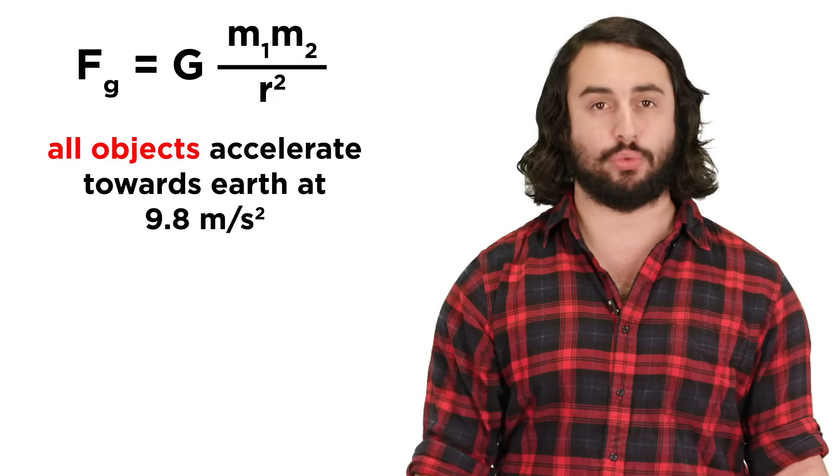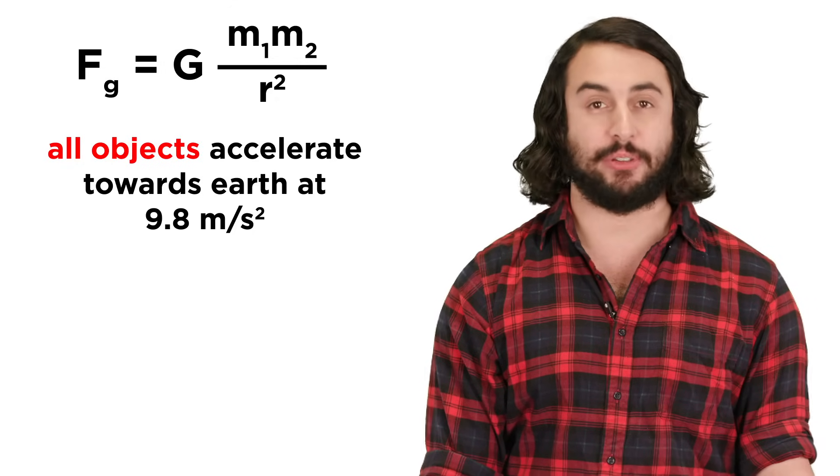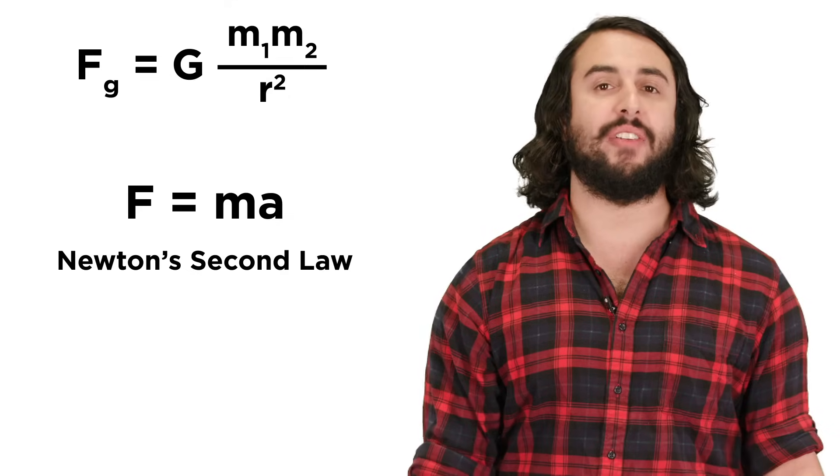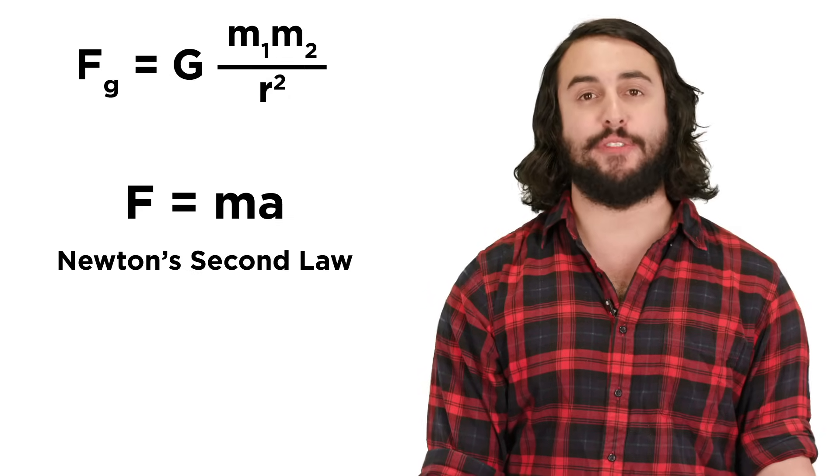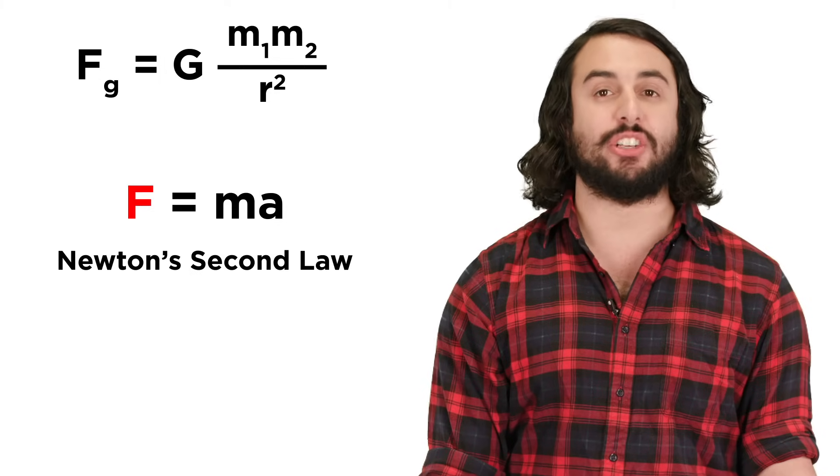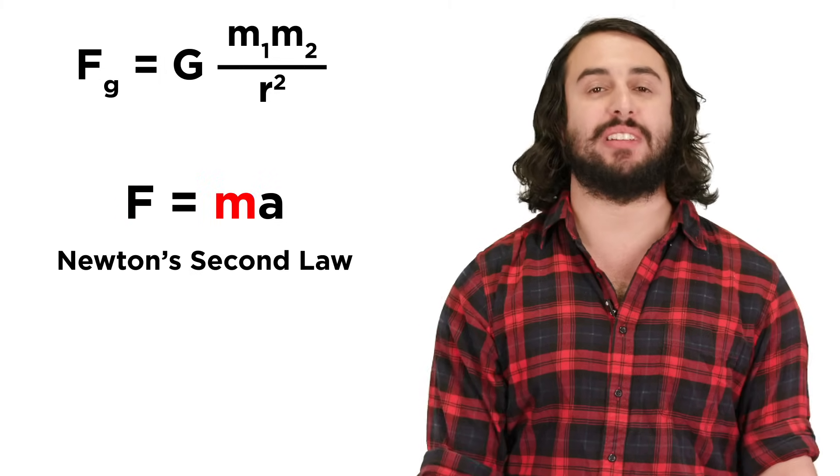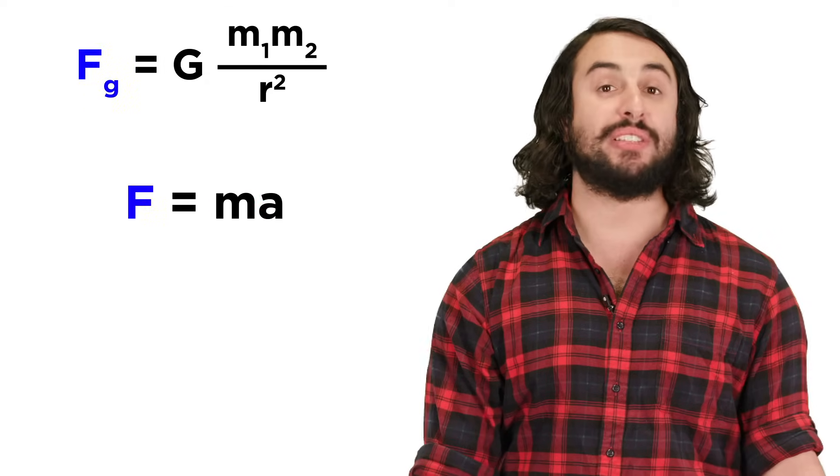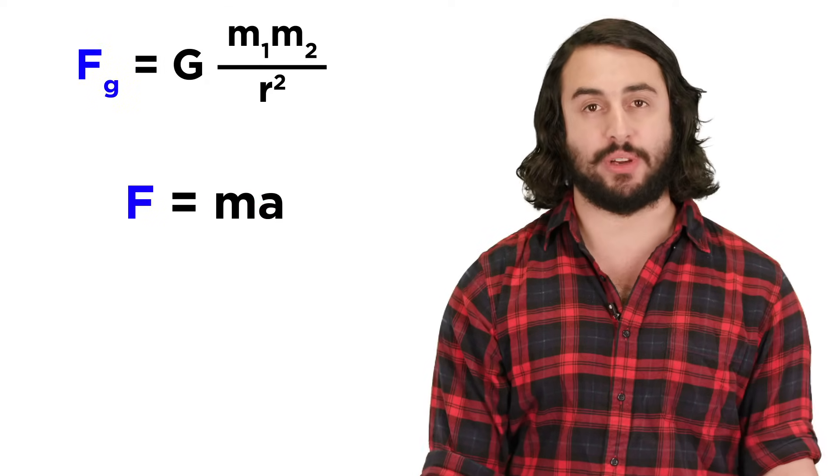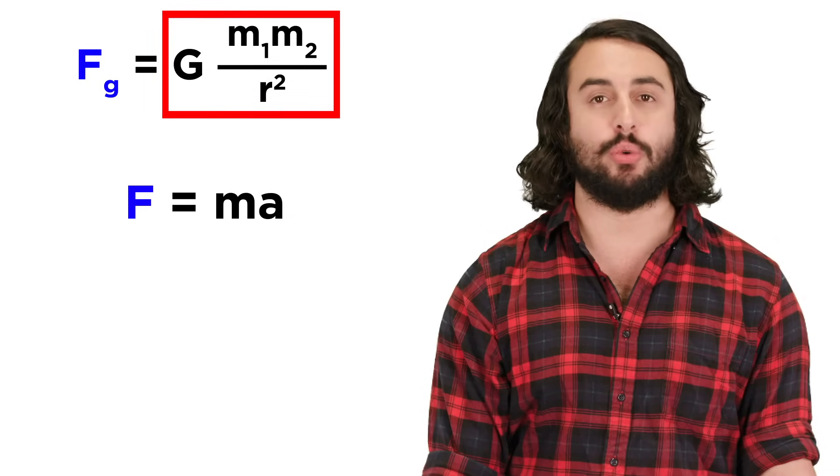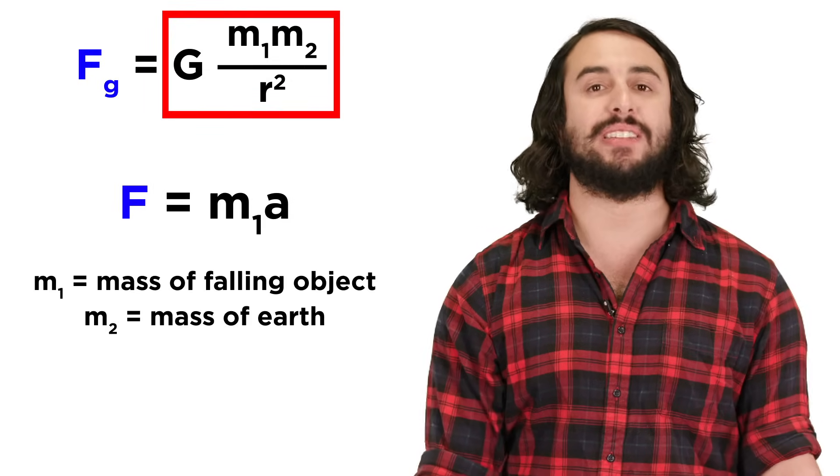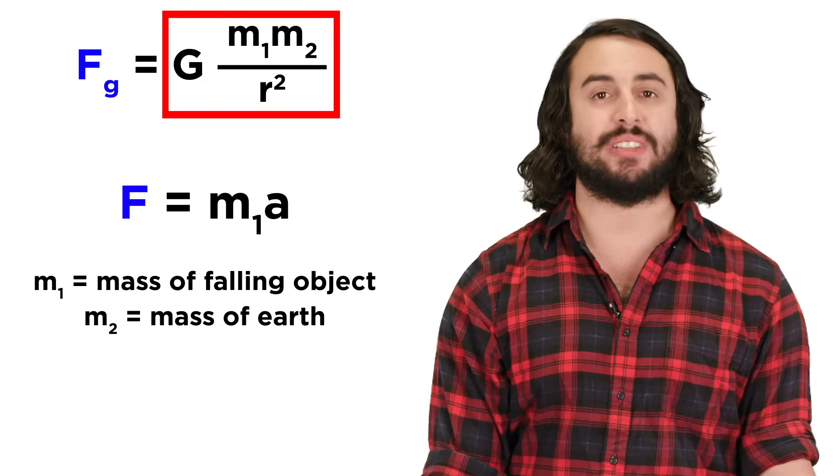This fact is easy to derive if we do some algebraic manipulation. We know that a falling object exhibits behavior according to Newton's second law, F equals ma, where the force that generates the falling is equal to the mass of the object times its acceleration, but this force is the gravitational force, so we can also model the following behavior with Gm1m2 over r squared, where m1 is the mass of the object and m2 is the mass of the earth.